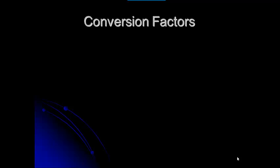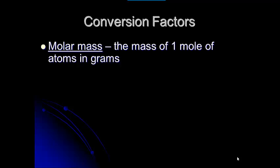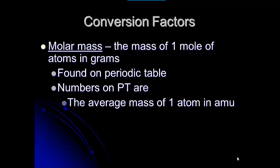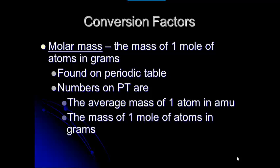We've got two different conversion factors. We've got molar mass — that's the mass of one mole of atoms in grams. That's what we use to relate our mass of a substance to the moles of the substance. We can find that on the periodic table for individual elements. The numbers on the periodic table are the mass of one atom in AMU, and also the mass of one mole of atoms in grams — that's one mole, which is 6.022 times 10 to the 23rd atoms in grams.